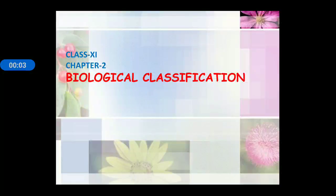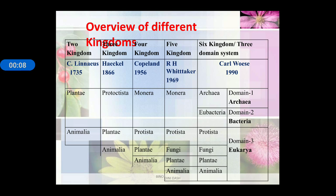Good morning students. Today we are going to start our next chapter, that is biological classification. Classification is a branch in which we categorize an individual or an organism on the basis of its observable characters. Classification is mainly five kingdom, and firstly there are different modes of classification systems that originated, and different scientists have proposed different concepts about the classification system.